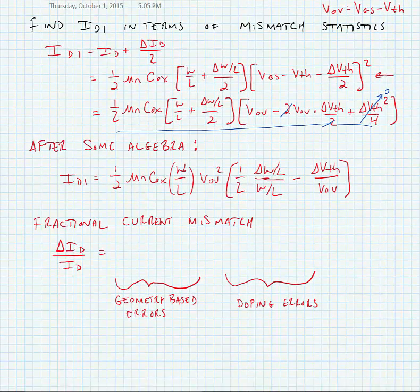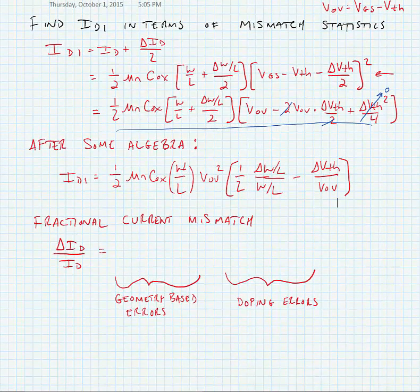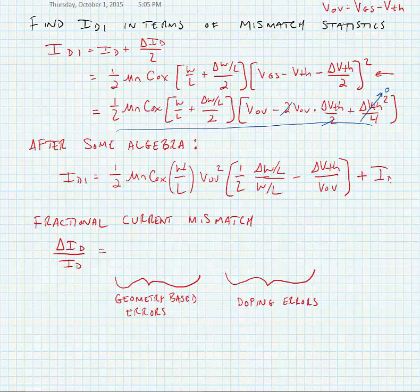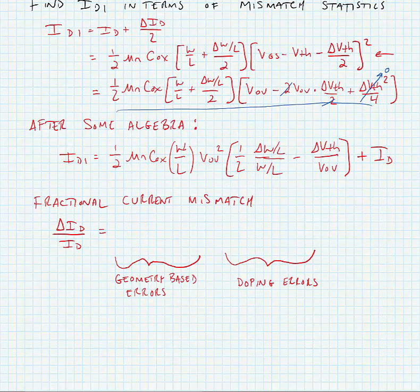So we can write this as a fractional current mismatch, delta ID divided by ID, and if we did that, we would see the following.